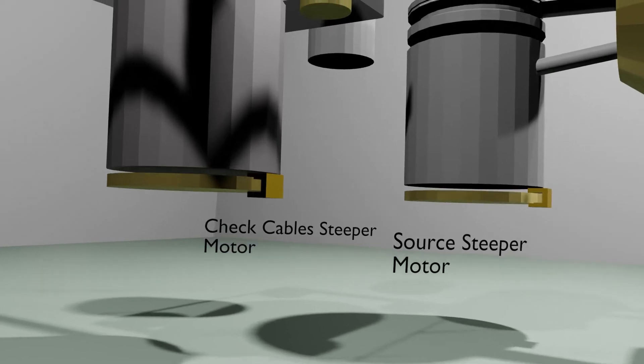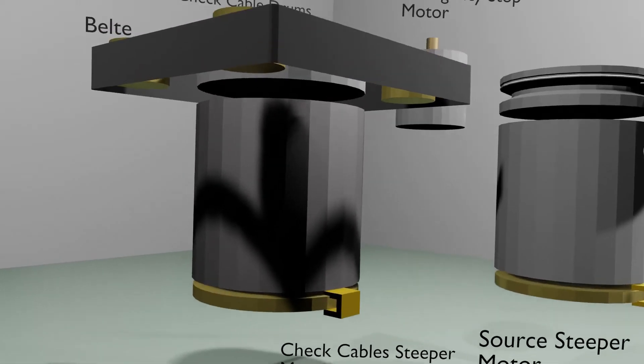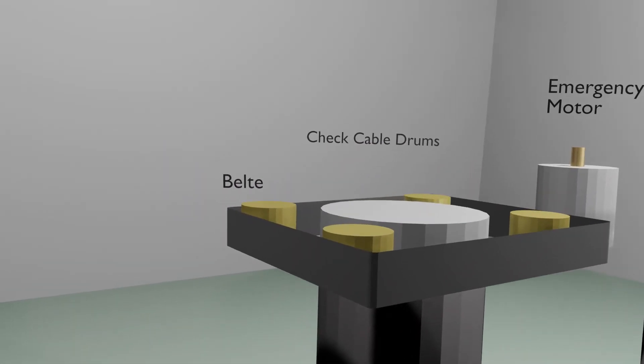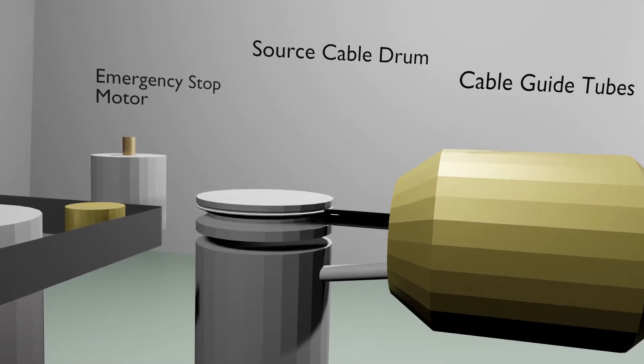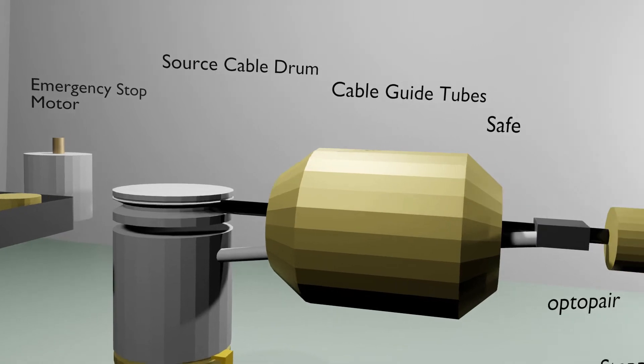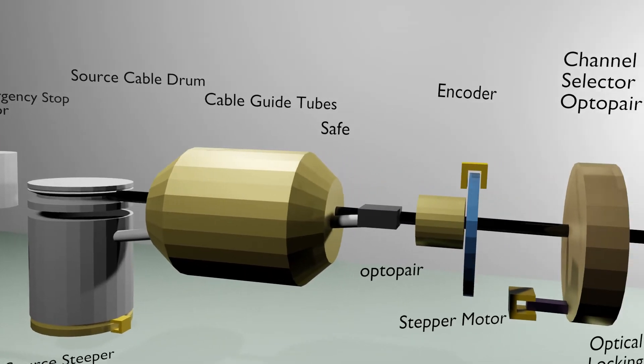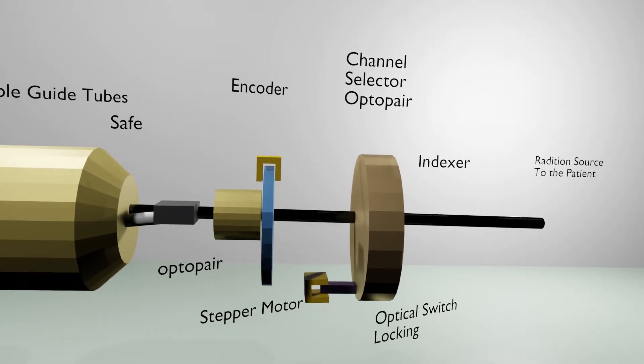The animation of guiding system for the check cable and the source cable of nucleation microselectron HDR device. In the off position, the source is located in the center of the tungsten safe. From there, the source can be transported through the indexer ring to the source transfer tubes and into the patient.